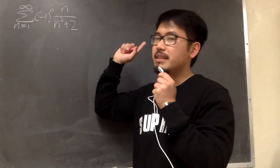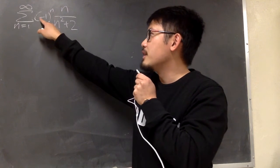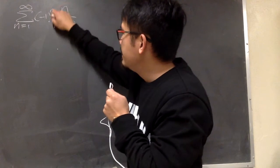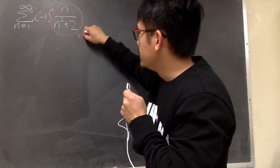As we can see, this is alternating because we have this factor, negative 1 in the parentheses to the nth power. So we can write this part here as the bn part.